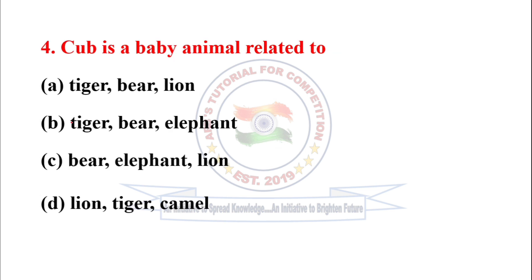Next question: Cub is a baby animal related to — Cub is the young of certain carnivorous mammals who eat meat and kill other animals for food. Looking at the options: tiger, bear, and lion are all carnivorous mammals, so the correct option is option A.